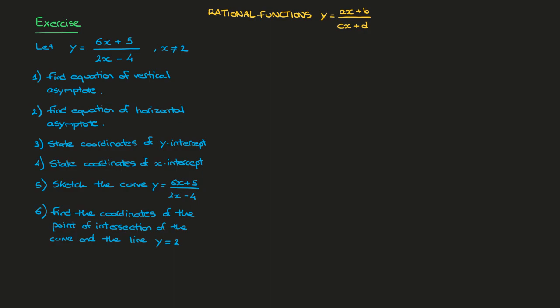Before I work through this exercise, the first thing I want you to keep in mind is that as soon as we're dealing with a function like this one — this type of function is always going to have the same features as y equals 1 over x. Any function that can be written as a linear over a linear is always obtained from that function. All we've done is translated it — shifted it to the side, upwards, or stretched it — but always keep in mind that linear over linear gives the same type of graph as y equals 1 over x.